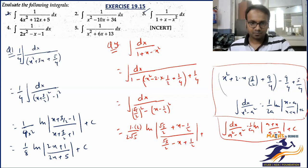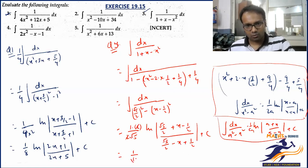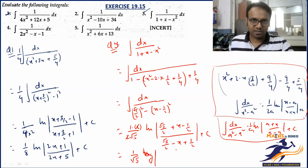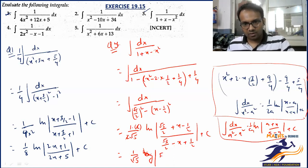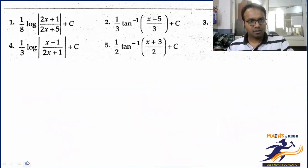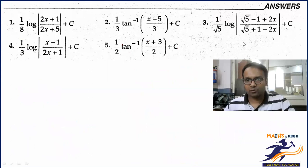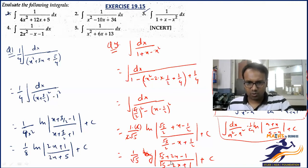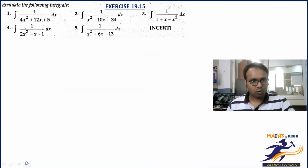We should always try to simplify the final answer. This gives us 1/root5 · log of ... simplifying by multiplying top and bottom by 2: numerator becomes (root5 + 2x - 1) and denominator becomes (root5 - 2x + 1) plus C. That should be the answer. Let's check: the given answer is (1/root5) · log|(root5 - 1 + 2x)/(root5 + 1 - 2x)|. Our answer is quite similar — no problematic difference.